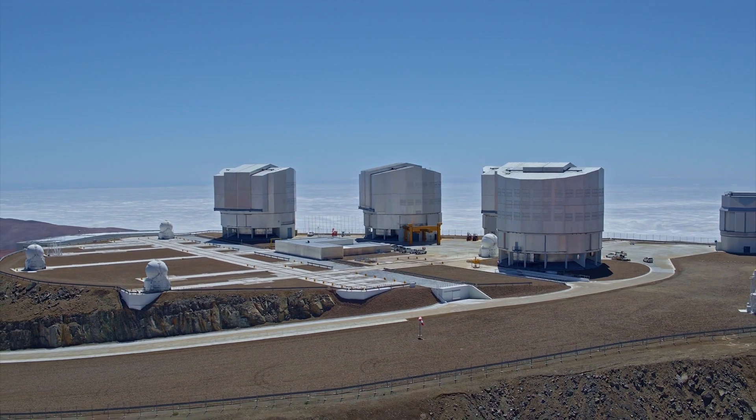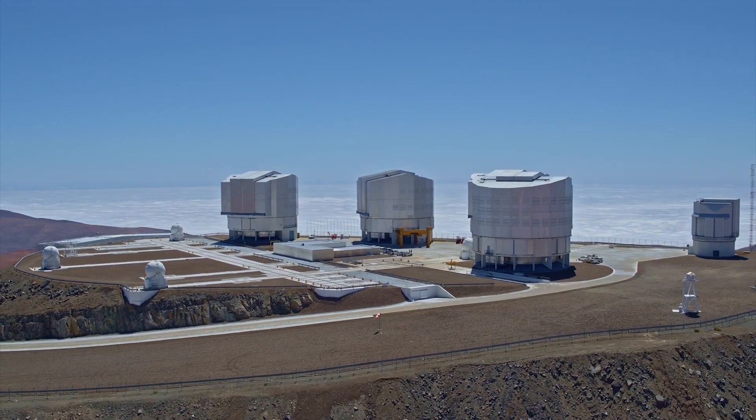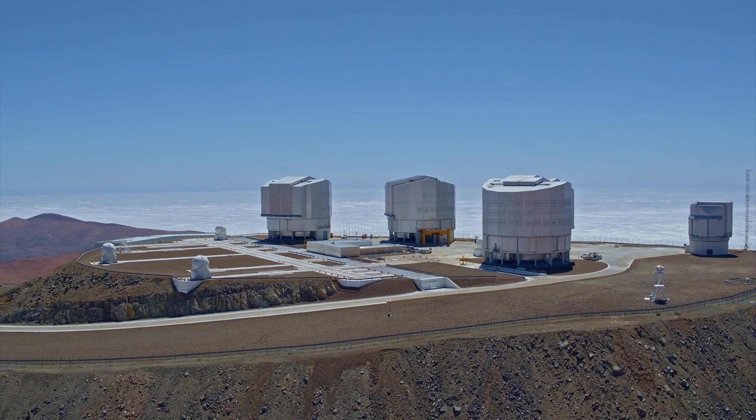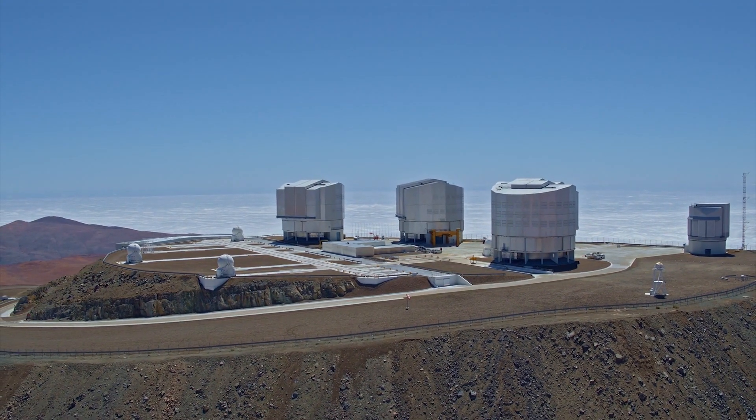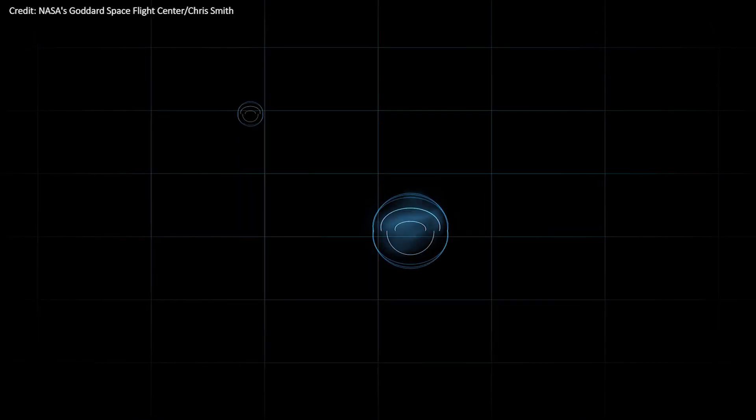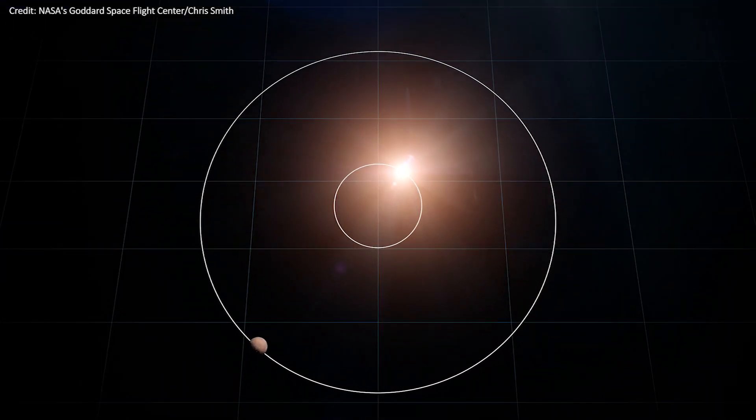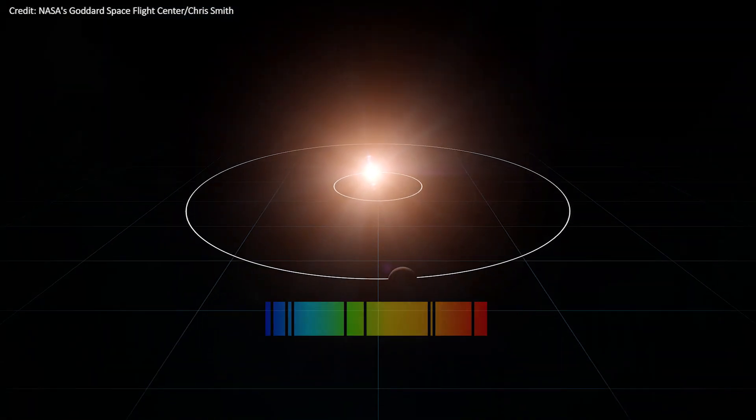Using data from the European Southern Observatory in Chile, the researchers used the radial velocity method to detect the presence of planets. This technique uses tiny wobbles in a star's orbit to reveal the gravitational presence of exoplanets.